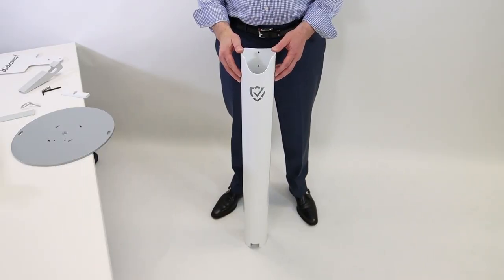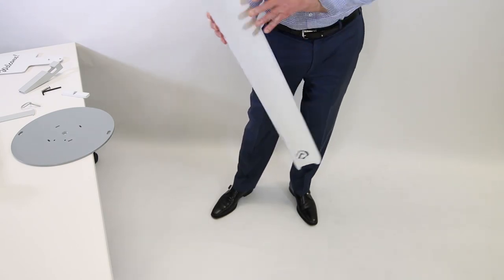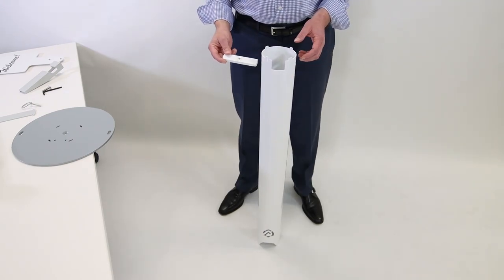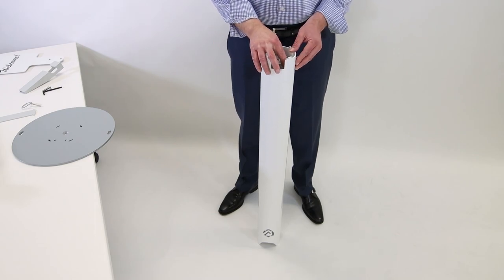So first we start by taking the main tube. We take the front of it which has the logo on it and we turn it upside down. Next we take our cross beam, we slide it inside one side of our tube and across to the other side.